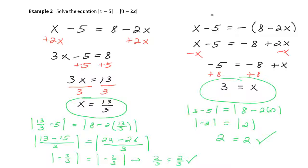When you set the two expressions equal, you end up with the same number and the absolute values still hold equality. When you make one side negative, you get a negative and a positive, but under the absolute value they reduce to the same amount. You don't have to check every time — just set up one equation, set up another with one side negated, and then solve them.